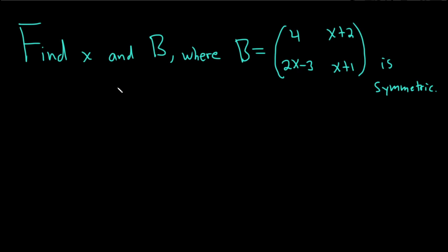In this problem we have to find x and B, where B is the 2×2 matrix given by 4, x+2, 2x-3, and x+1. We're also told B is symmetric, so that's key.